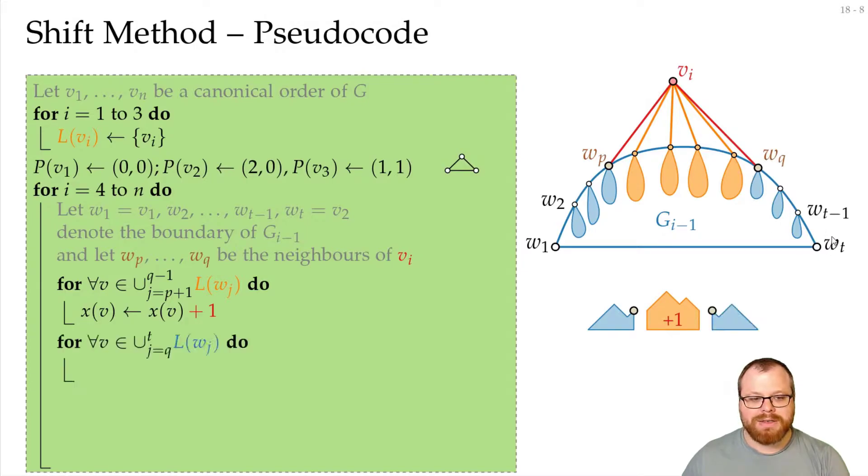And then we have all these. For those we start with q and go up to t. And all these sets we move by 2 to the right. That's the whole shift we have to do.